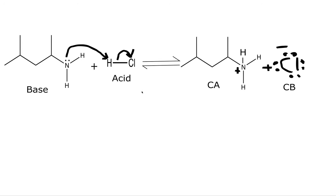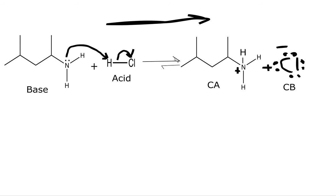Now it's time to decide which side of the equilibrium is favored. We do that by comparing the base to the conjugate base. We have a nitrogen with a lone pair on it, and we have a chlorine anion with a negative formal charge. Chlorine is more electronegative, so it likes to have those electrons on it. The forward reaction is favored, which we can show by making the forward arrow larger and the reverse arrow smaller.